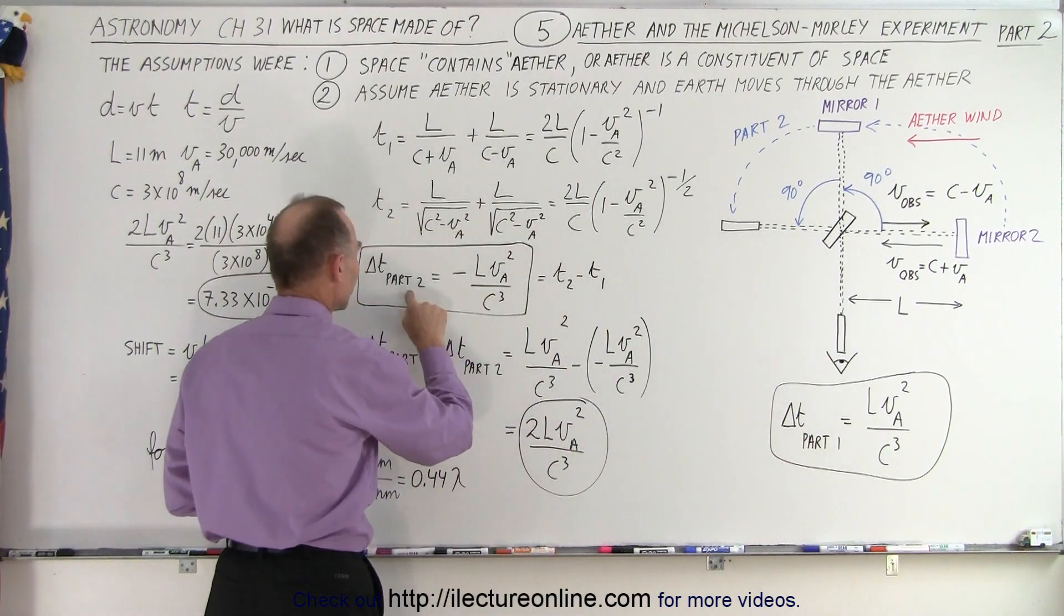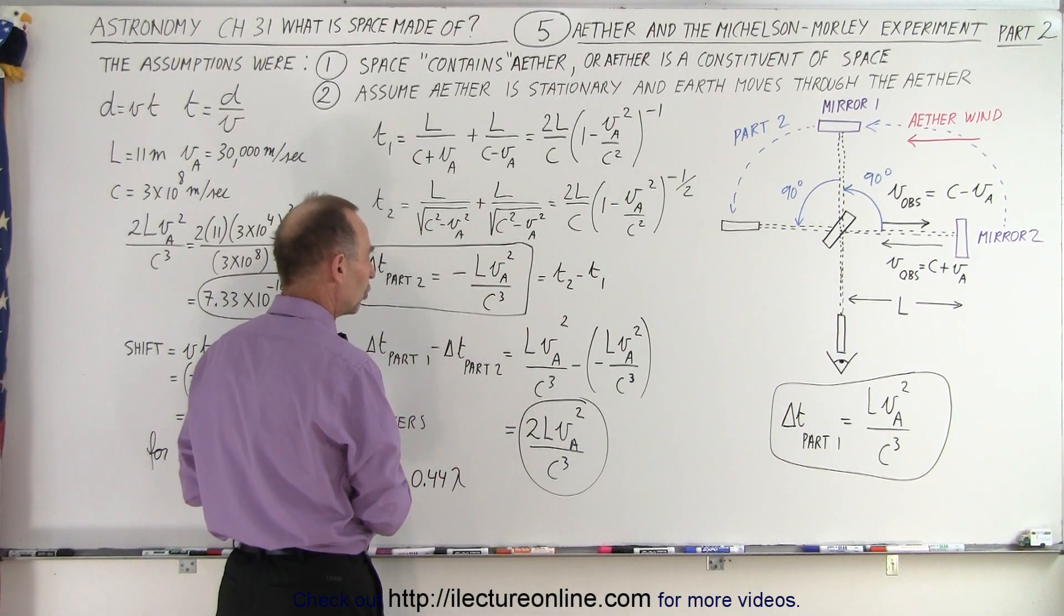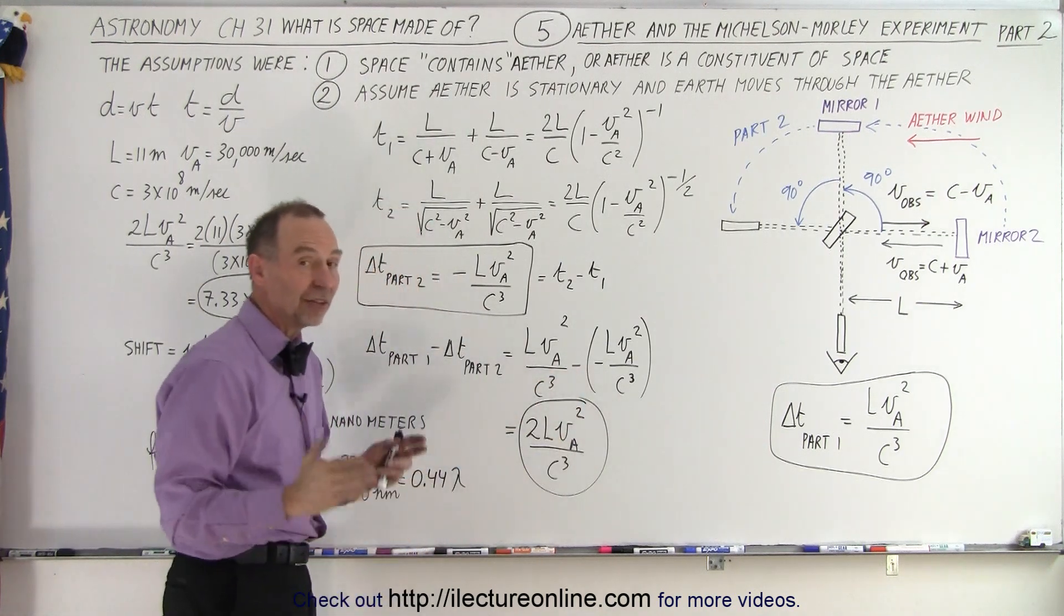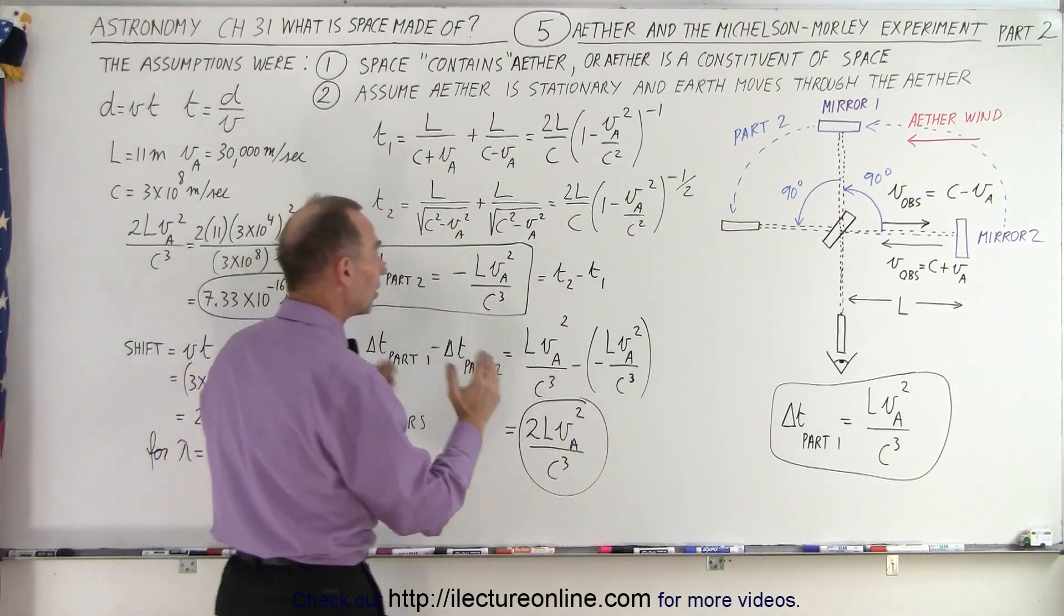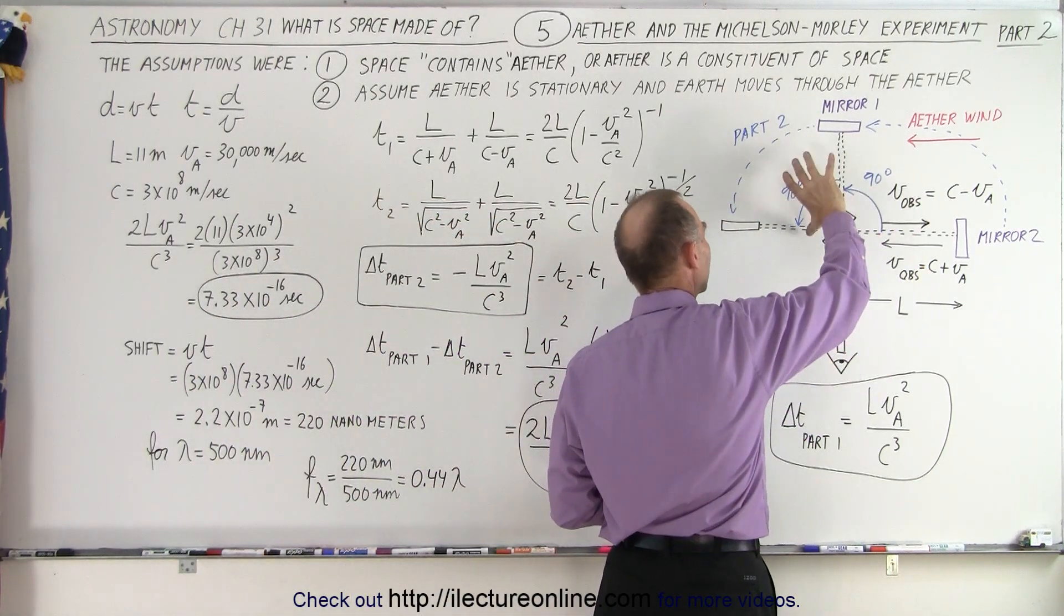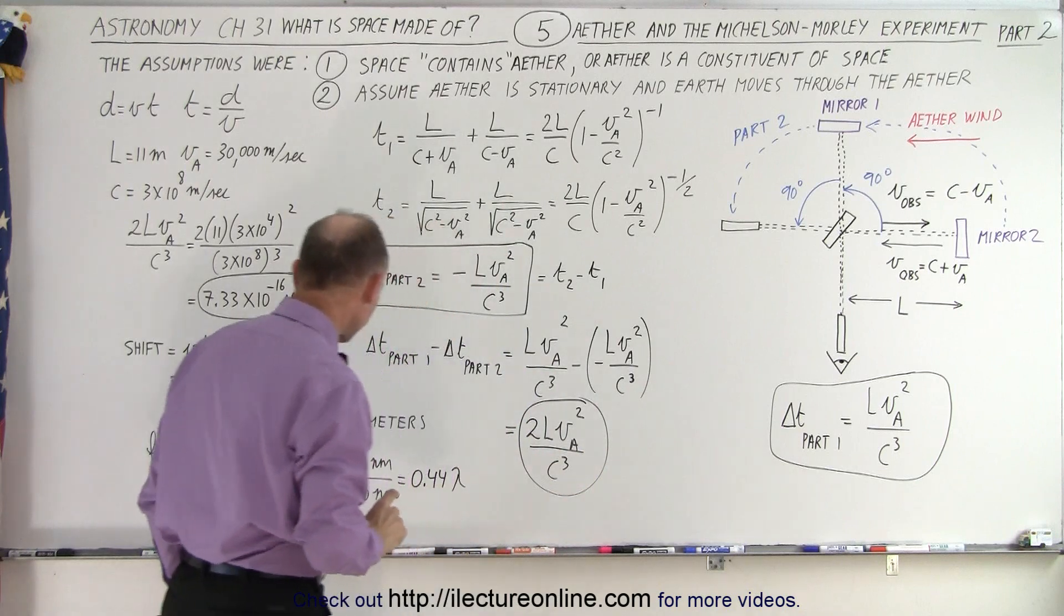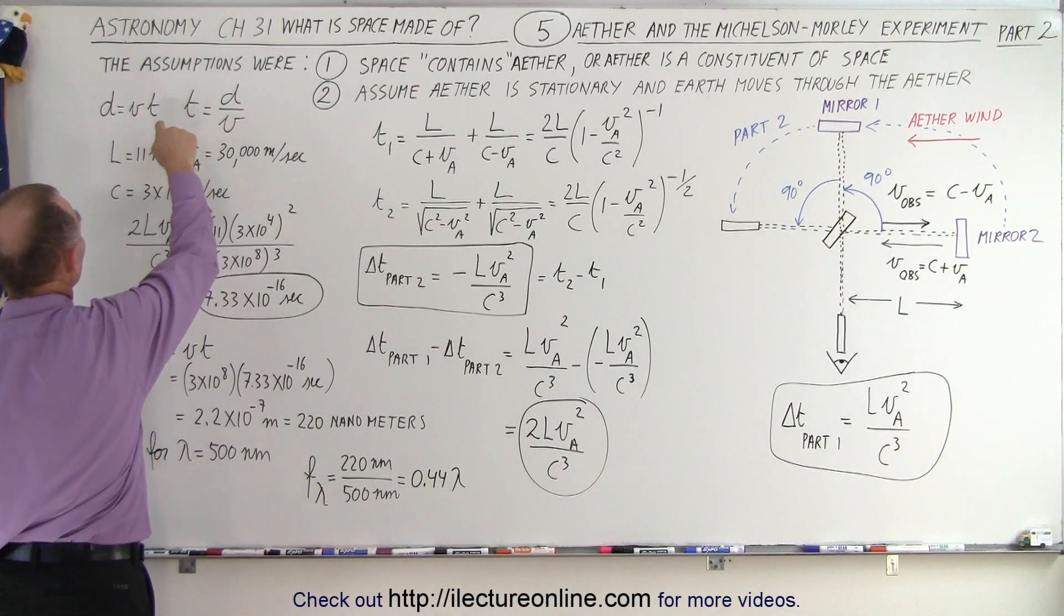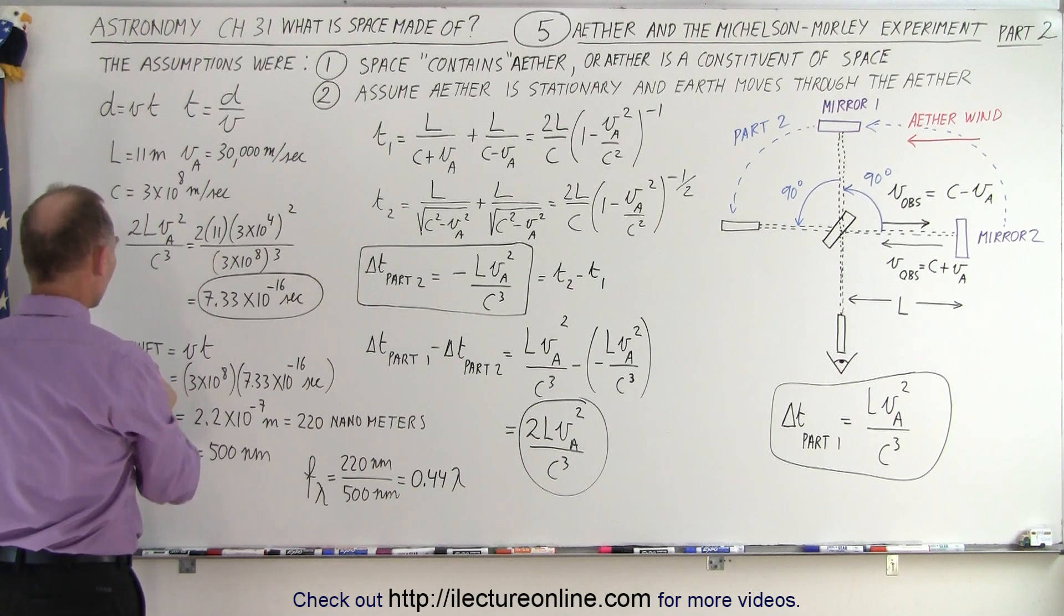When we subtract the delta t from part one and the delta t from part two, we take the difference between those two. When we subtract a negative it becomes additive, and so that gives us the total delta t between what we find here and what we find when we rotate the mirrors 90 degrees.